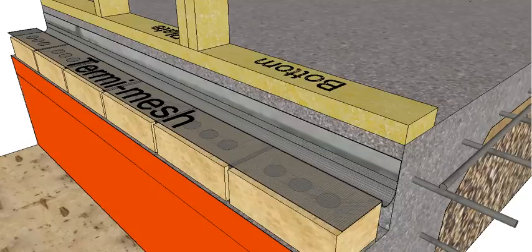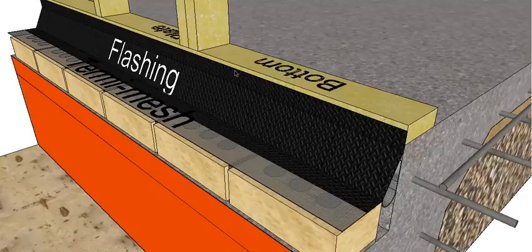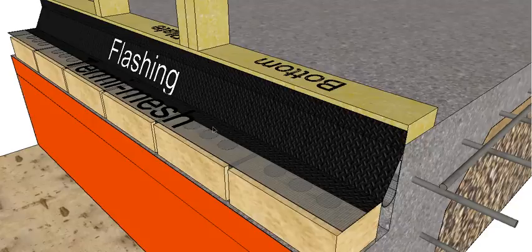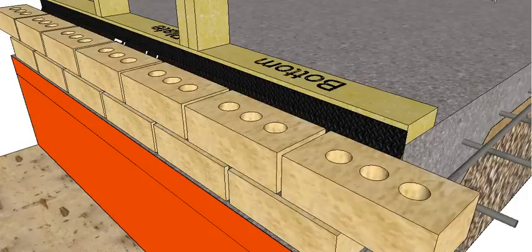Also in this layer you're going to put in your DPC or a flashing. It's going to run from the bottom plate into the brickwork. What that does is any water that runs down or goes through your bricks into the cavity will run down the back of the brick and then it will come out through what they call the weep holes.